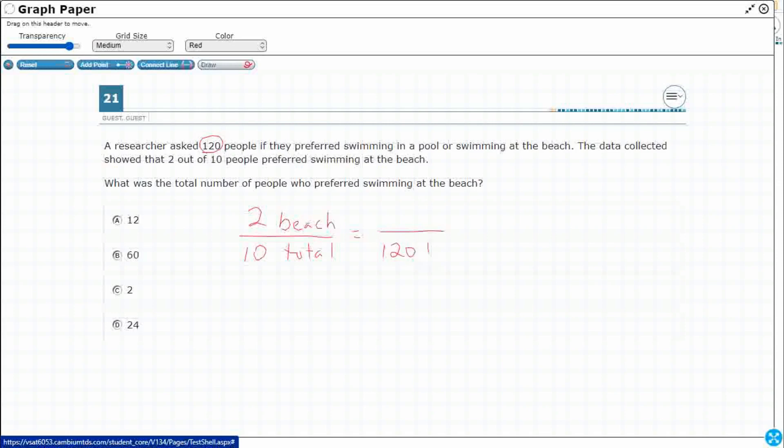That other total was just the ratio that they gave us. And I'm looking for how many people were at the beach. So you notice in this particular proportion, I've matched up my two beaches across from each other in the numerators, my two totals across from each other in the denominators.